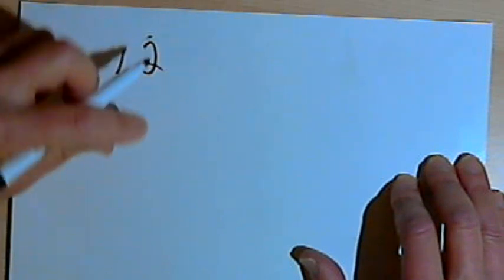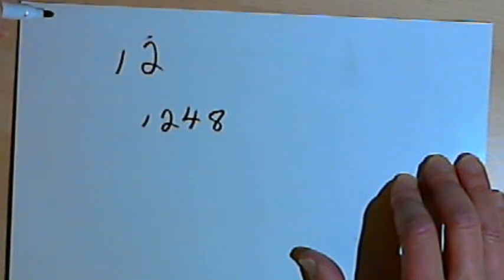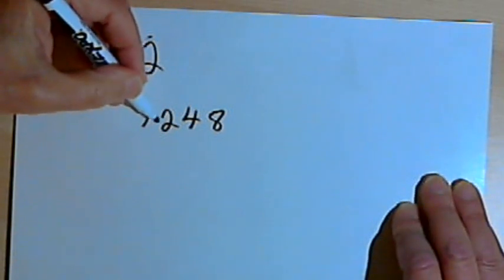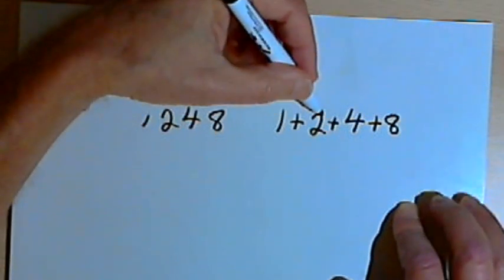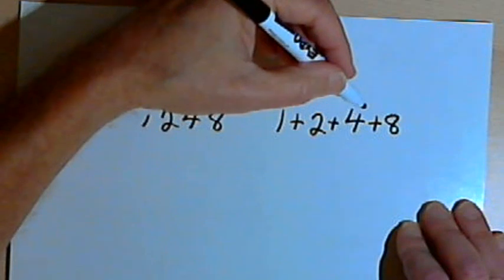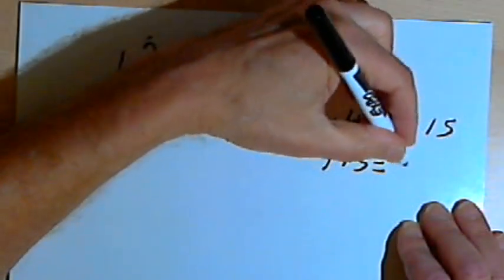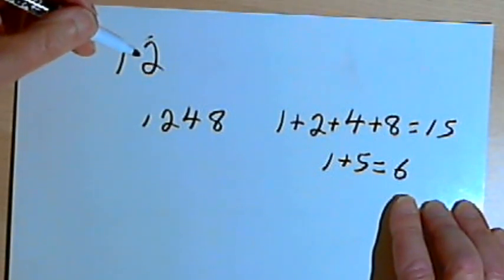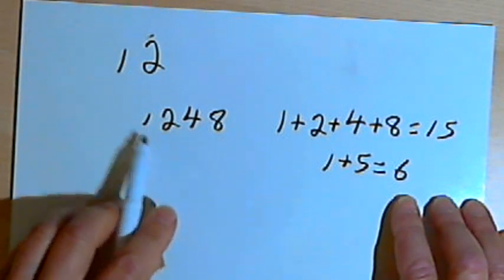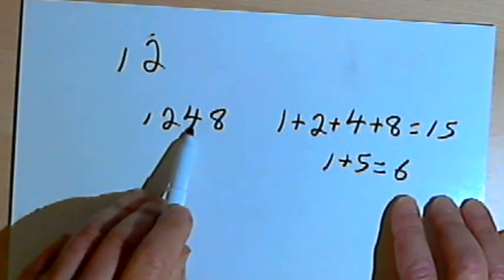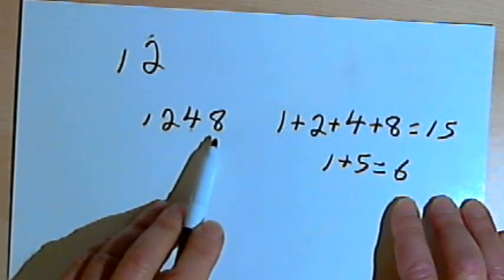So let's take the number 1,248. I'll add up the numbers. 1 plus 2 plus 4 plus 8. So 1 plus 2 is 3, 3 plus 4 is 7, 7 plus 8 is 15. I'll add the 1 plus 5, and I get a 6. So since I got either a 3, a 6, or a 9, I know the number is divisible by 3. And then I'm going to look at the number and see if I can divide it by 4. Well, I can because all I have to do is look at the last two digits, the 4 and the 8. And 48 is divisible by 4. So this number, 1,248, is divisible by 12.